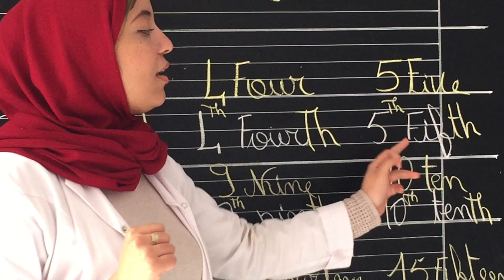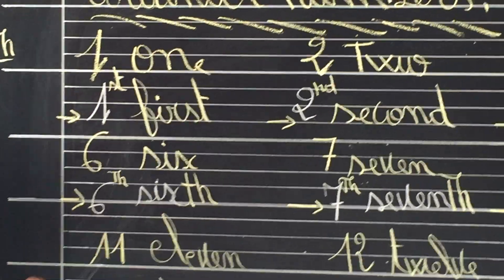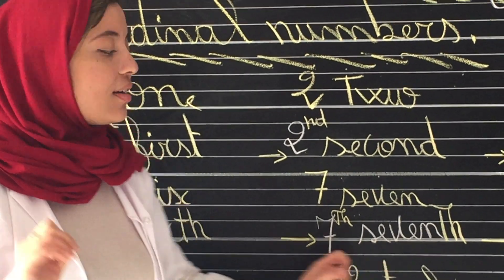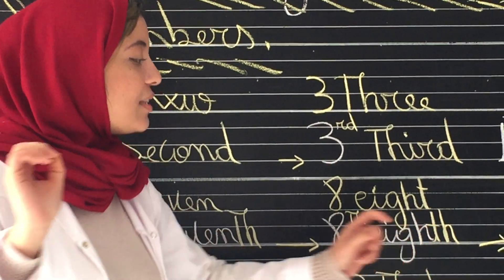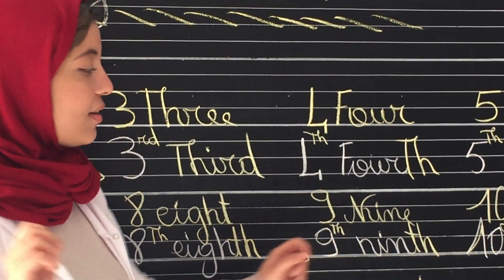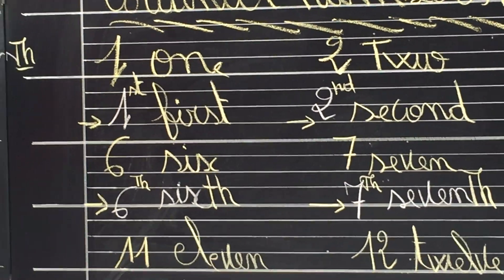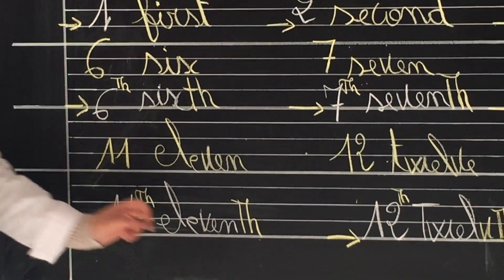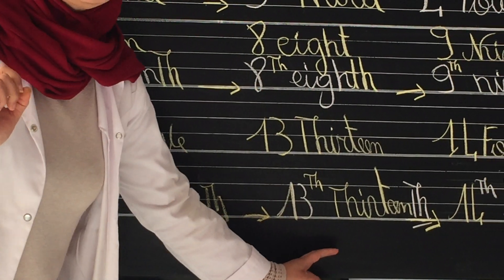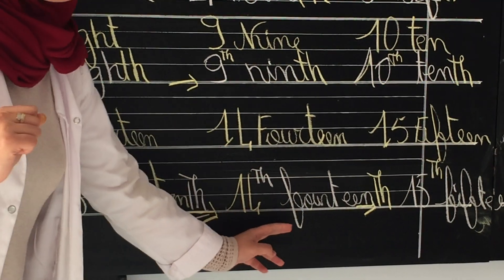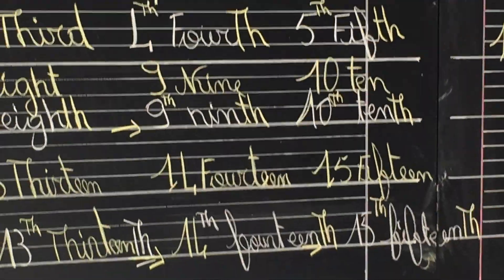5 — 5th. 6 — 6th. Very good. 7 — 7th. 8 — 8th, always the same rule, it ends with 'th'. 9 — 9th. 10 — 10th. 11 — 11th. Very good. 12 — 12th. 13 — 13th.